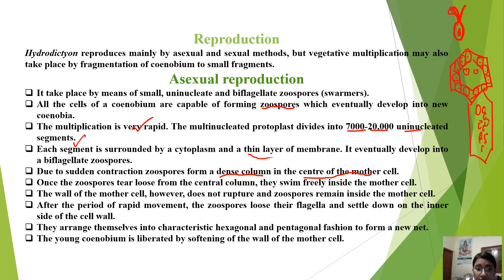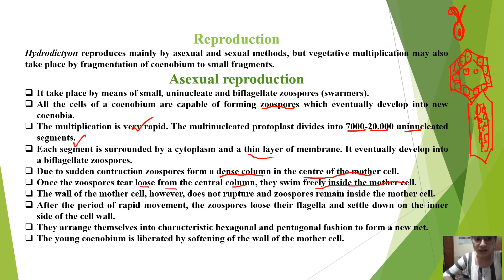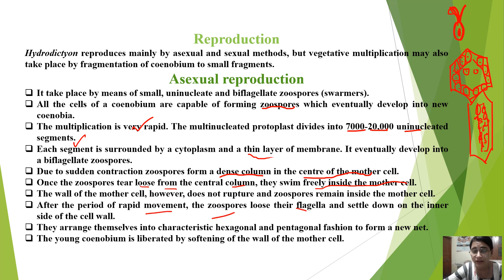Once the zoospores tear loose from the central column, they swim freely inside the mother cell. The wall of the mother cell does not rupture. After a period of rapid movement, the zoospores lose their flagella and settle down on the inner wall of the cell wall. They arrange themselves into a characteristic hexagonal and pentagonal fashion to form a new coenobium.